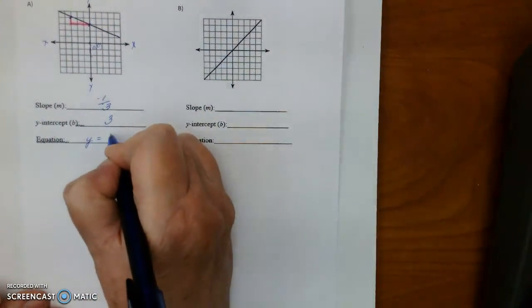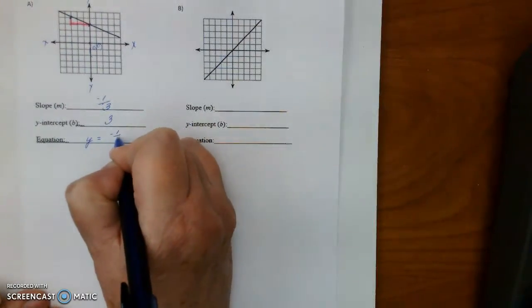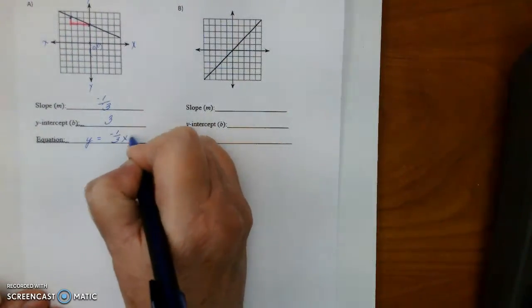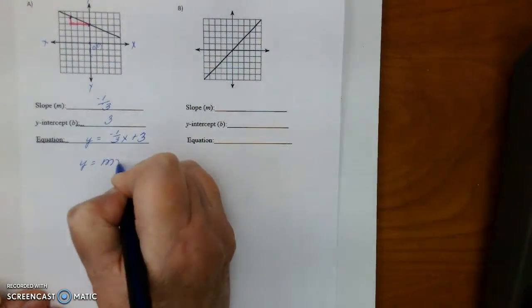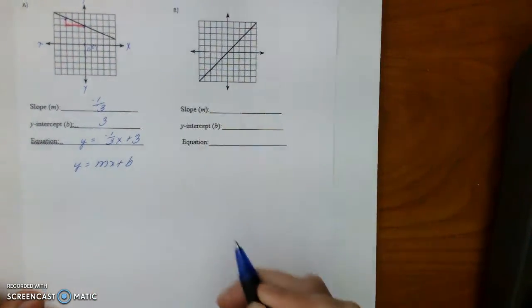Okay, so Y equals slope, negative 1 over 3, X plus 3, Y equals MX plus B, all right?